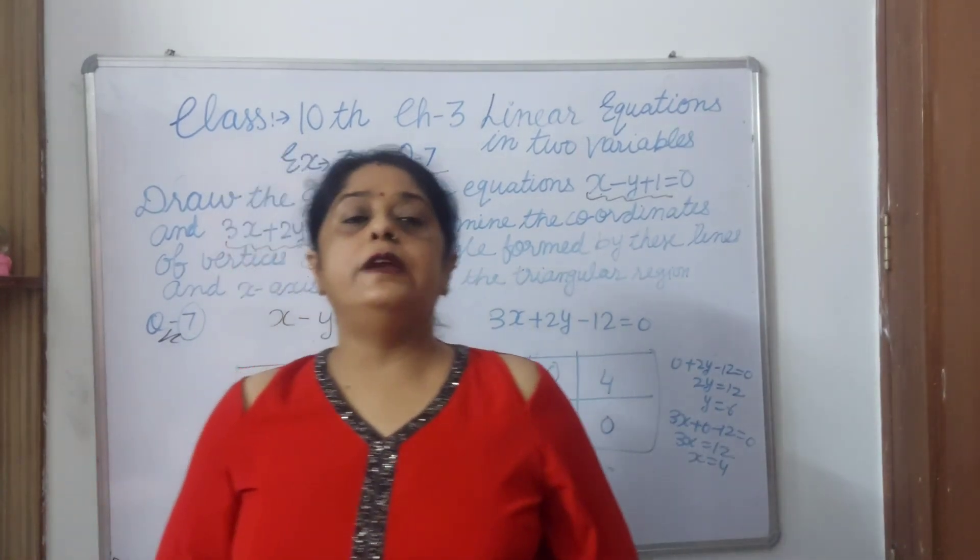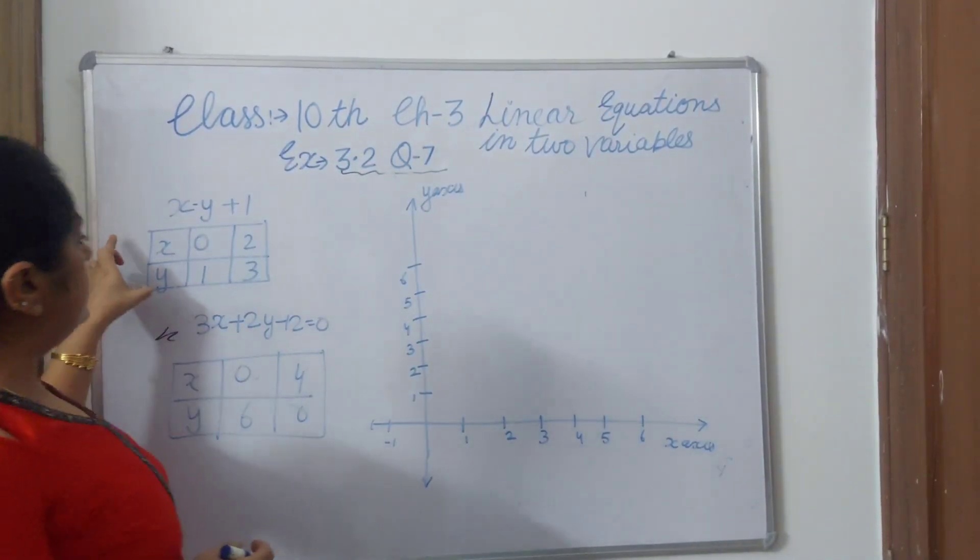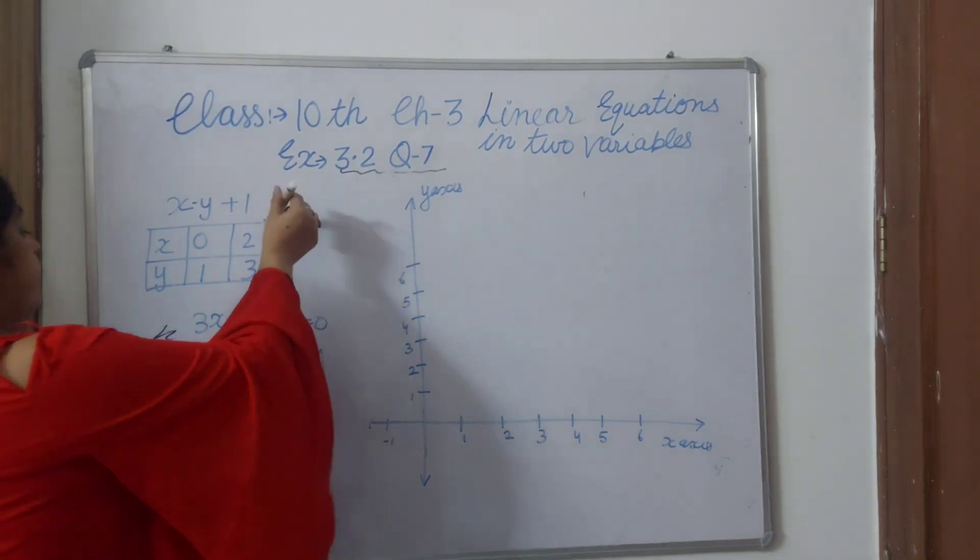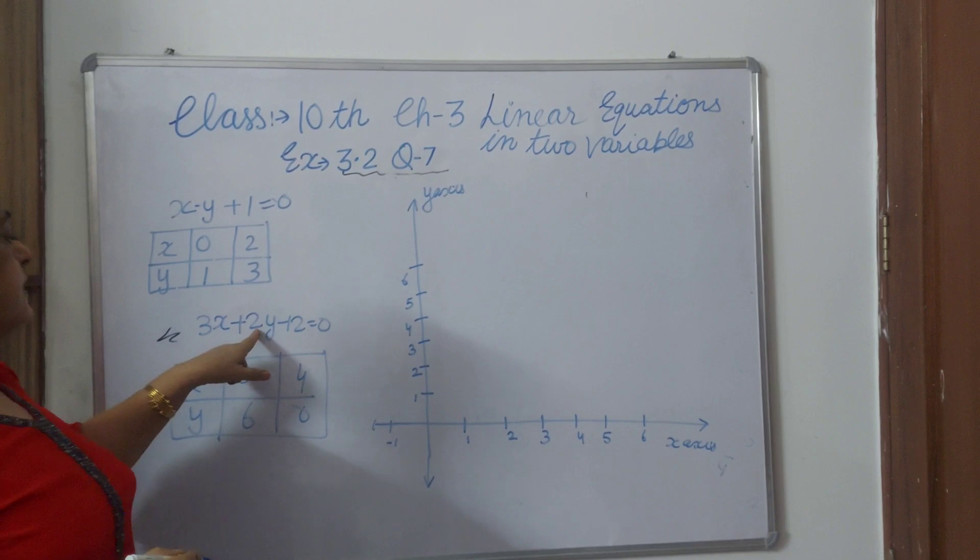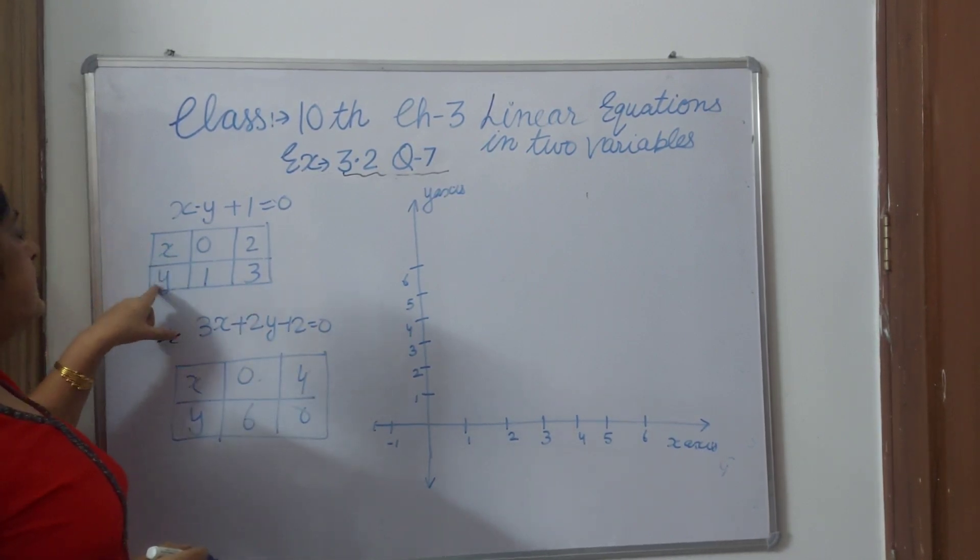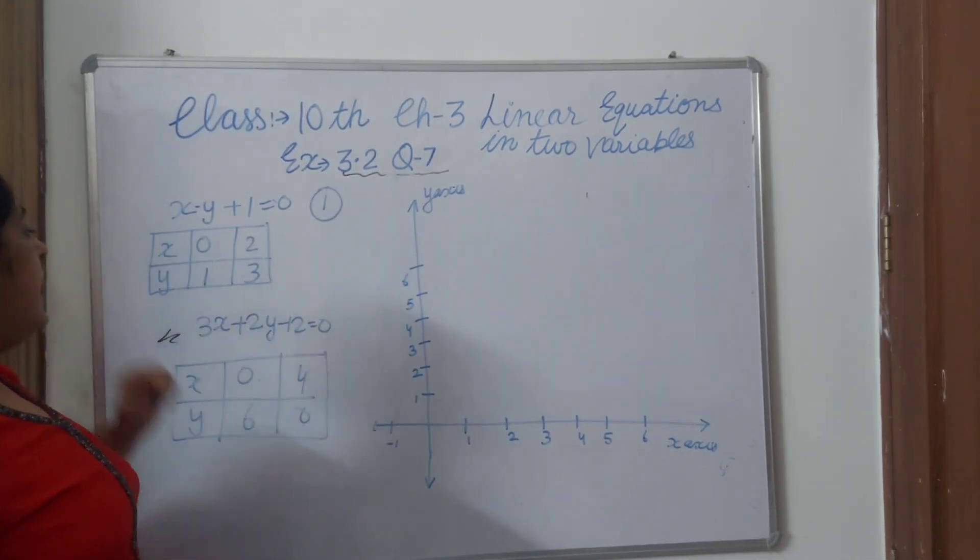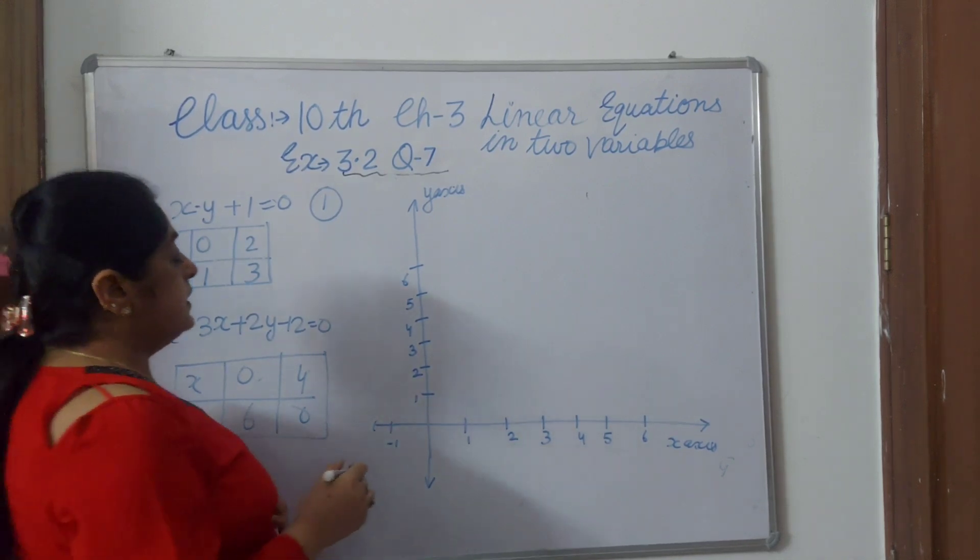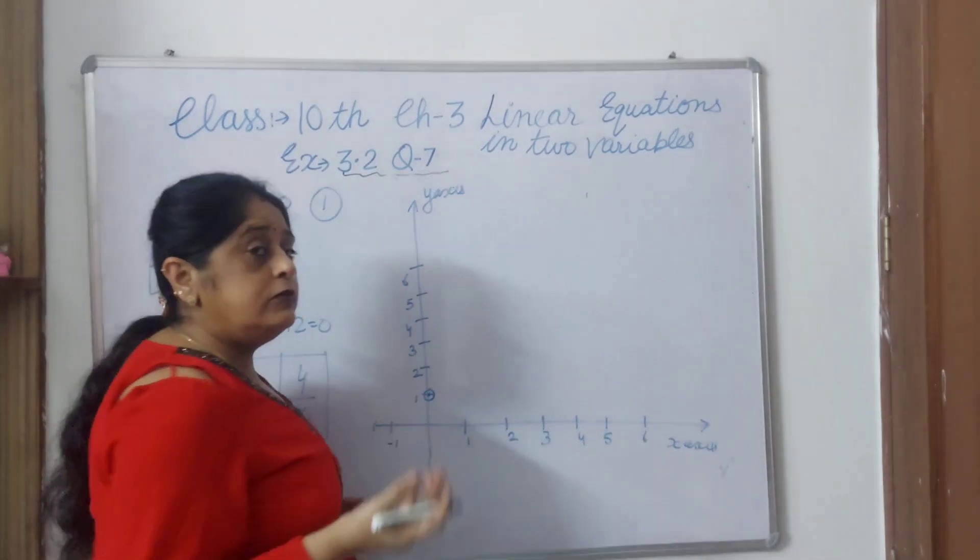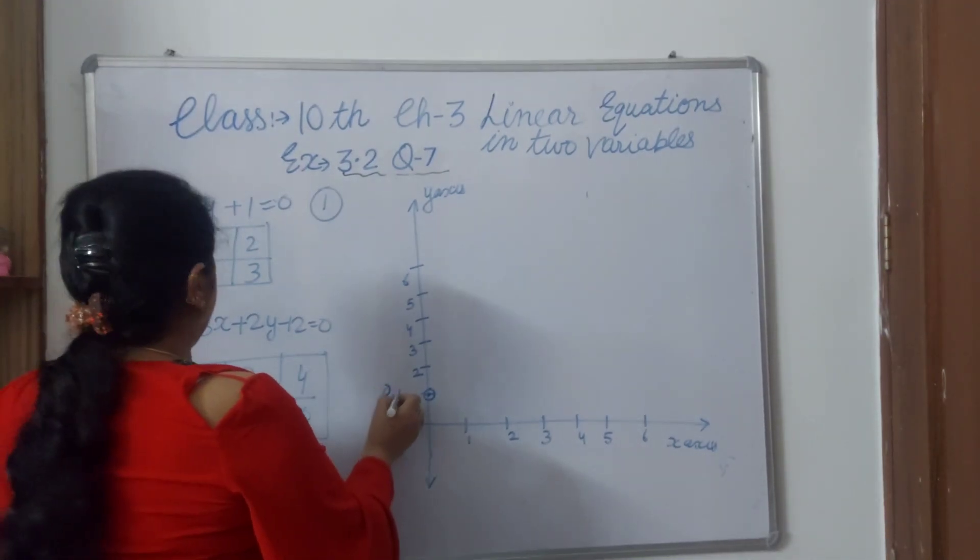Now these values we will draw on the graph. Now the table I have made here: x minus y plus 1 equals 0, and second is 3x plus 2y minus 12 equals 0. These are two values, x and y. First, this first equation value we will draw on the graph. x is 0, y is 1. x is 0 and y is 1, here is the point.